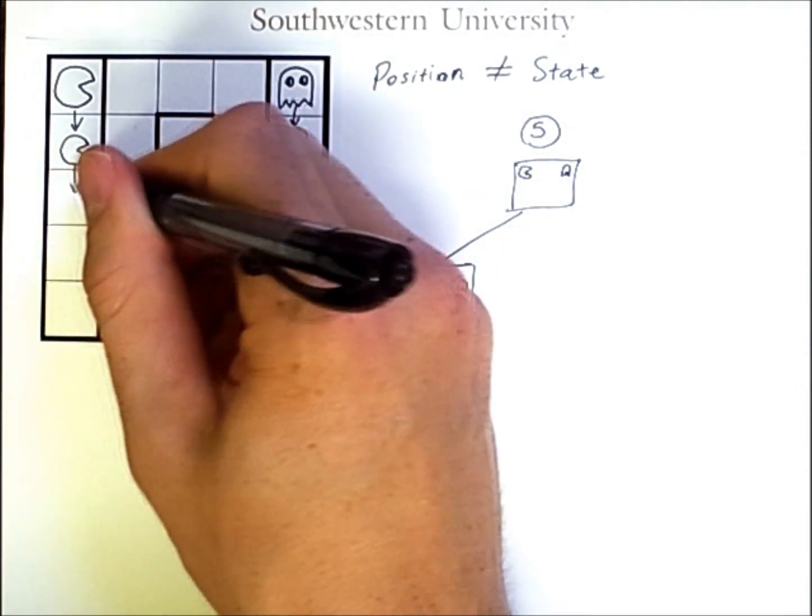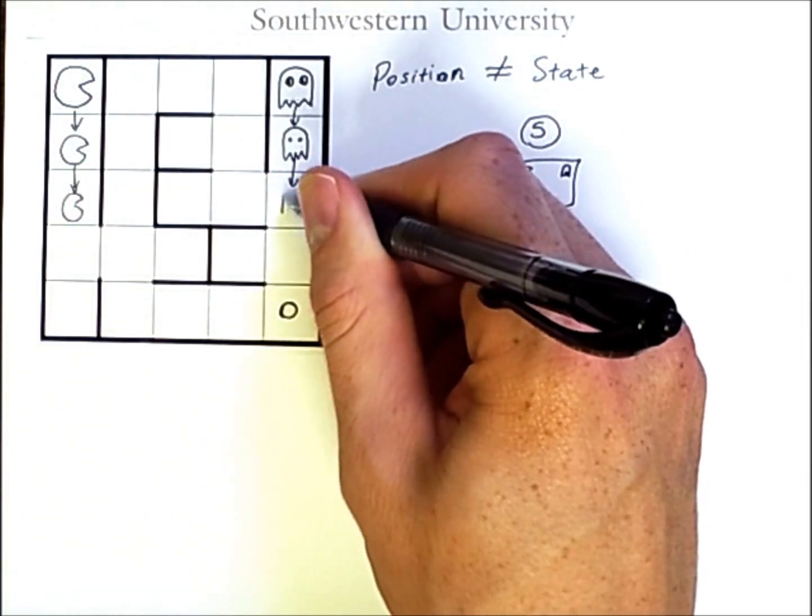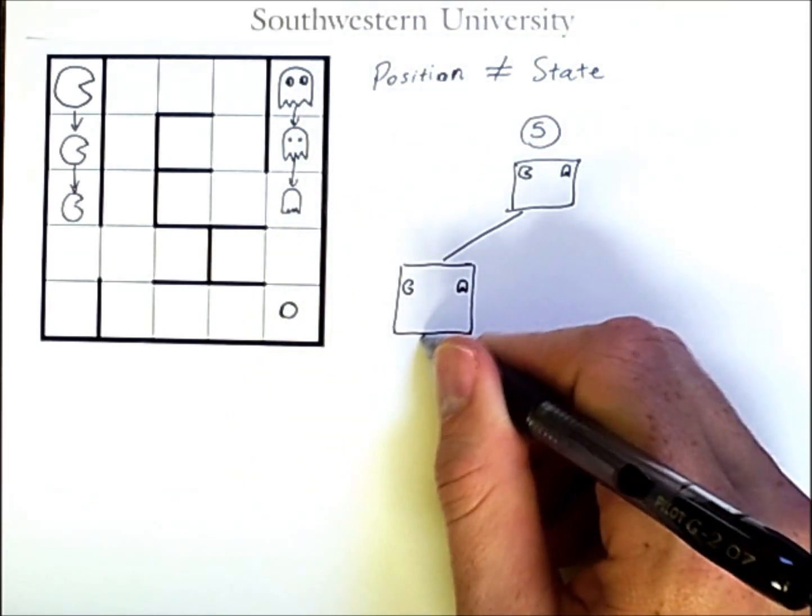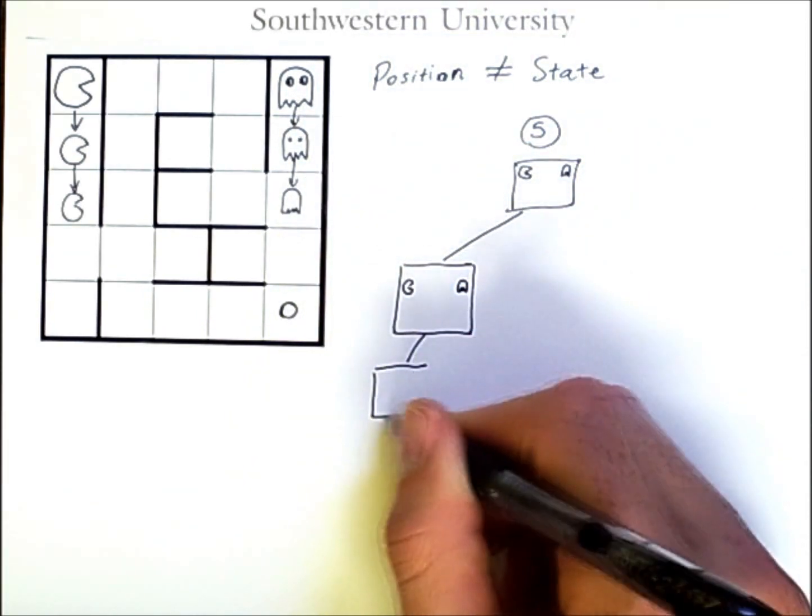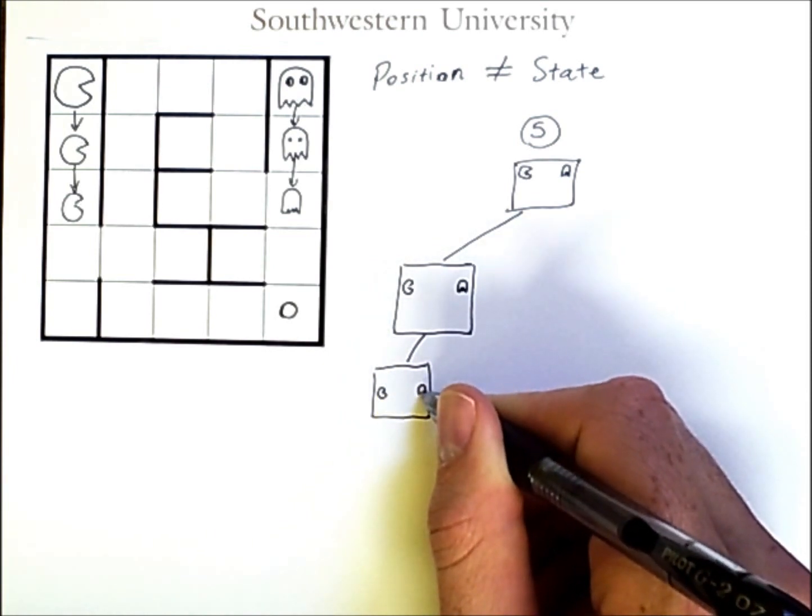Now, Pac-Man can move down again, in which case the ghost would move down again. And so, from here, we can reach another state where Pac-Man is a bit further down and the ghost is a bit further down.